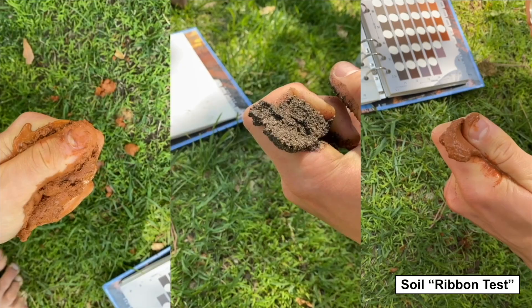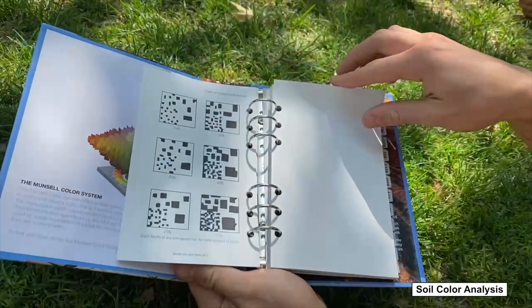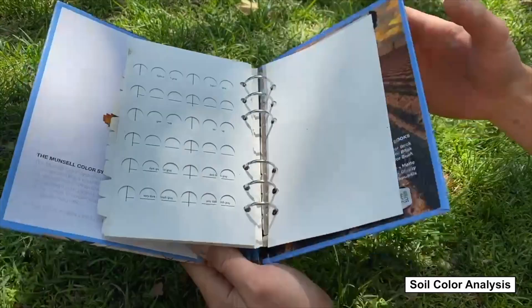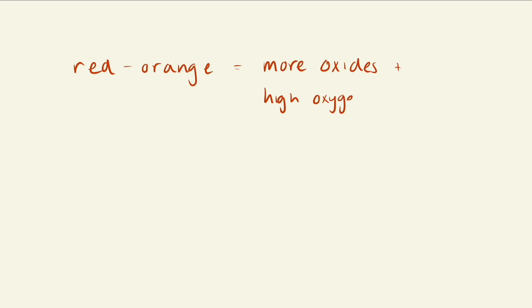Another test you can do at home is to look at soil color. In a lab, scientists do this with an official book called the Munsell Soil Color Chart, but you don't need one to try this. Instead, we can do it just by noticing what general color your soil is. If your soil is more reddish or orange, we know it has more oxides, so it formed in a high oxygen environment. If your soil is more gray or green, we know it formed in a low oxygen environment, like a bog. If your soil is super dark brown and black, like potting soil, it means it has lots of organic matter — plants love this stuff. Here's a red, oxide-rich soil that we analyzed for color using the book.